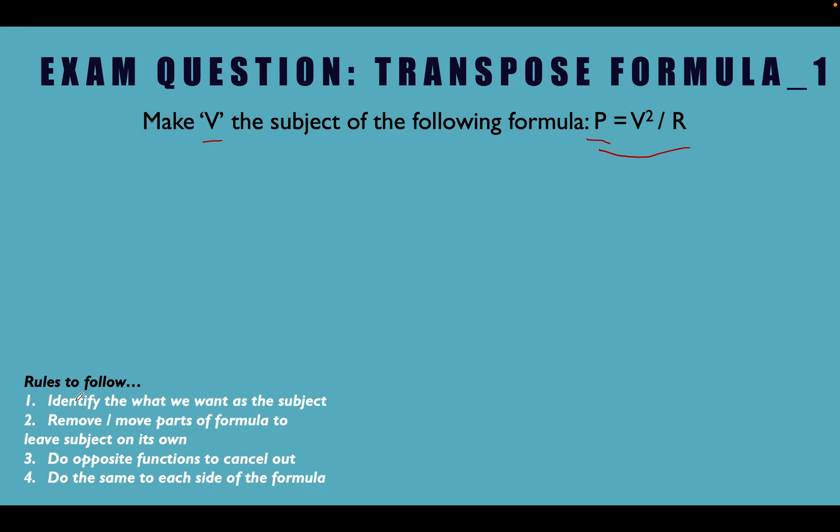So the rules we want to follow are, first of all we've got to identify what we want as the subject. Well we've done that, we want V as the subject. And where is it? It's trapped on that side there. Remove or move parts of the formula to leave the subject on its own. So we're going to move these functions and get rid of this onto this side in order to leave V on its own.